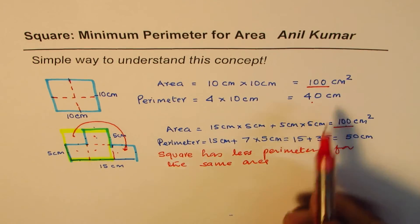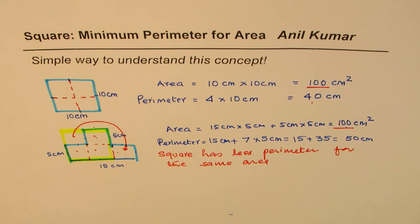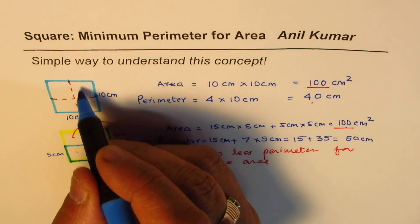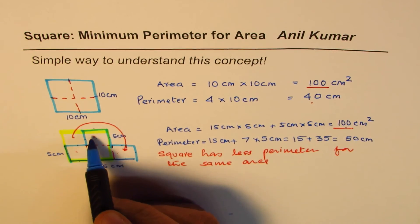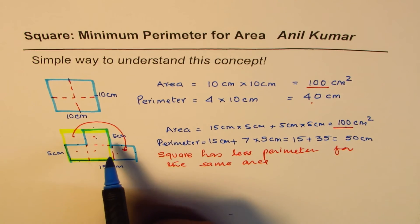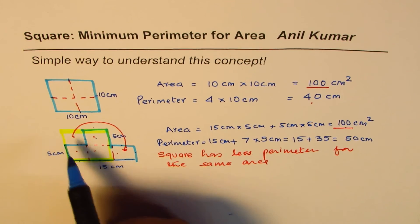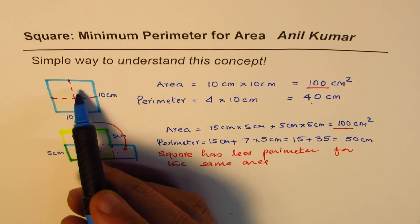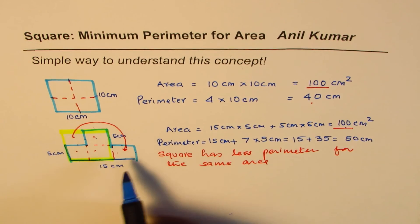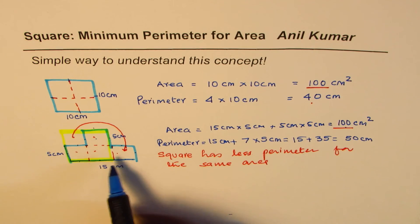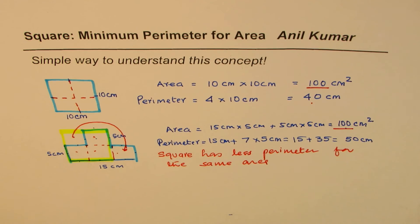You could have done in similar fashion if you cut another piece from here and spread it out. In that case you will find, since we are cutting off the area from the square and placing it elsewhere, area remains same, however the perimeter increases. Do you get the idea?